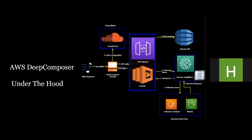Here is how Amazon Deep Composer works end-to-end. The input melody is captured by the AWS Deep Composer console. The console makes a backend call to the AWS API that triggers a Lambda function. Bookkeeping is recorded in DynamoDB. The execution Lambda function performs an inference query to SageMaker, which hosts the model and the training inference container. The query is run on the generative AI model, the model generates a composition, and the composition is returned. The user can hear the composition in the console and can also publish it to SoundCloud.